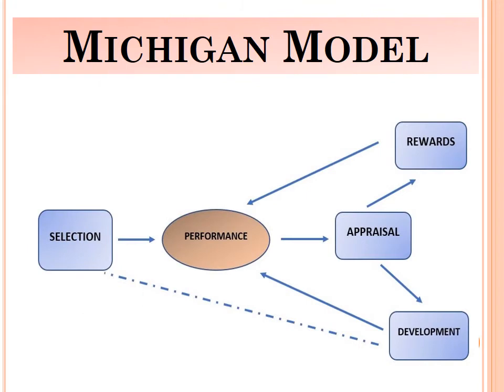In the flow sheet diagram, the cycle begins with selection, followed by performance, then appraisal. From appraisal there may be rewards or development. After development, performance is influenced, and after rewards, performance may also be influenced.